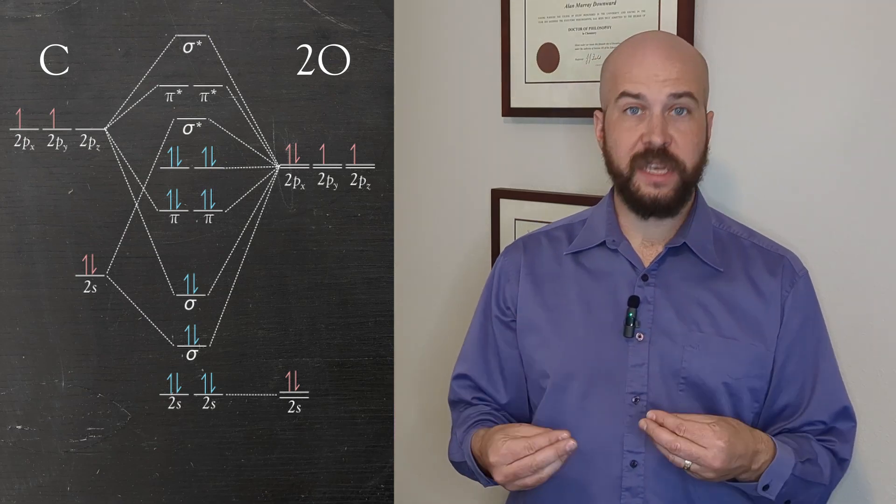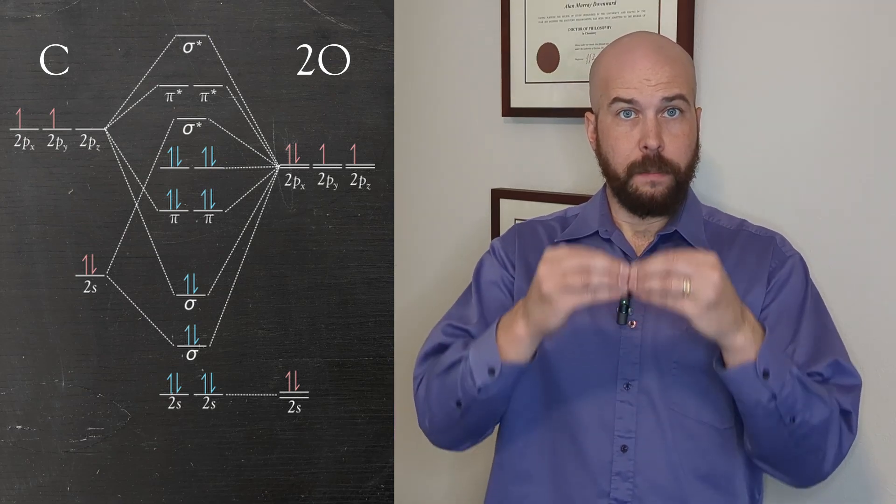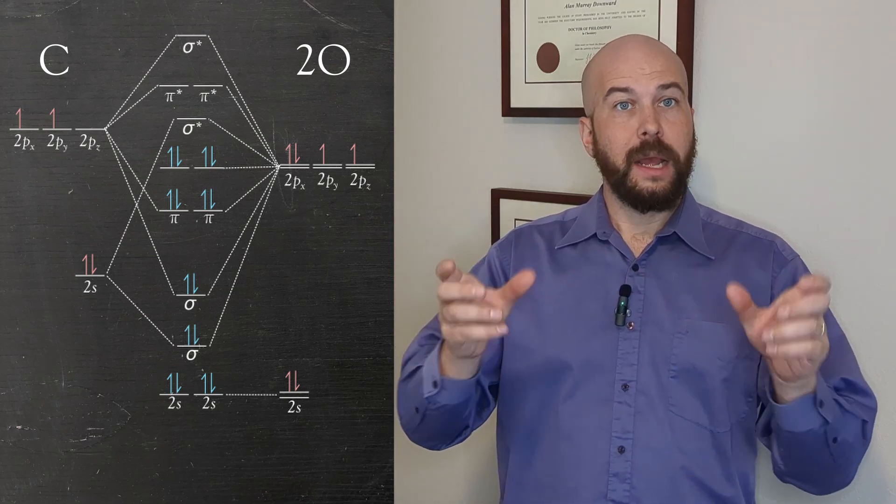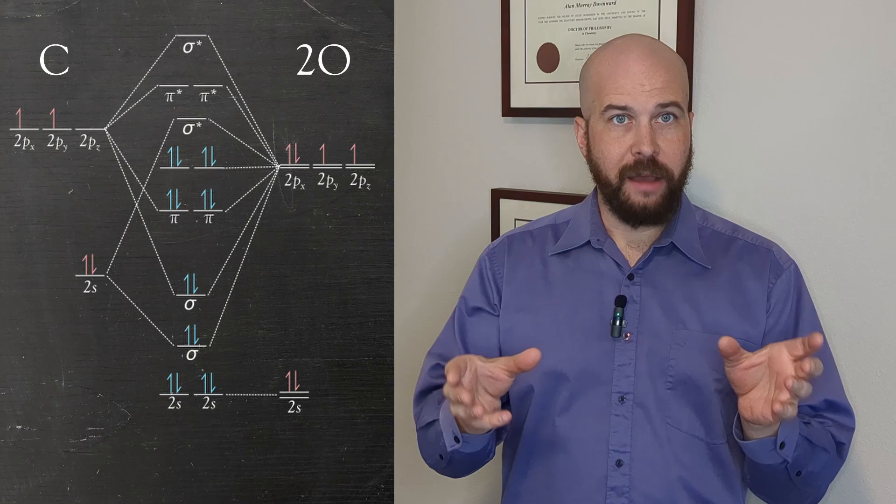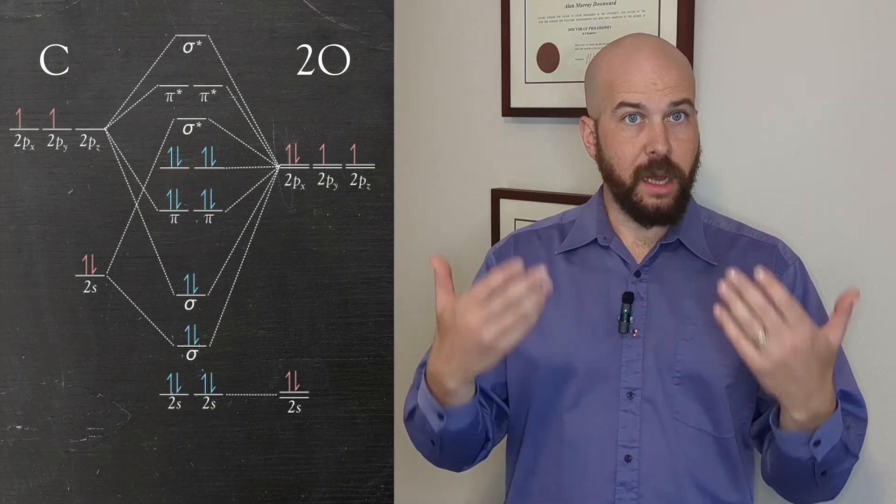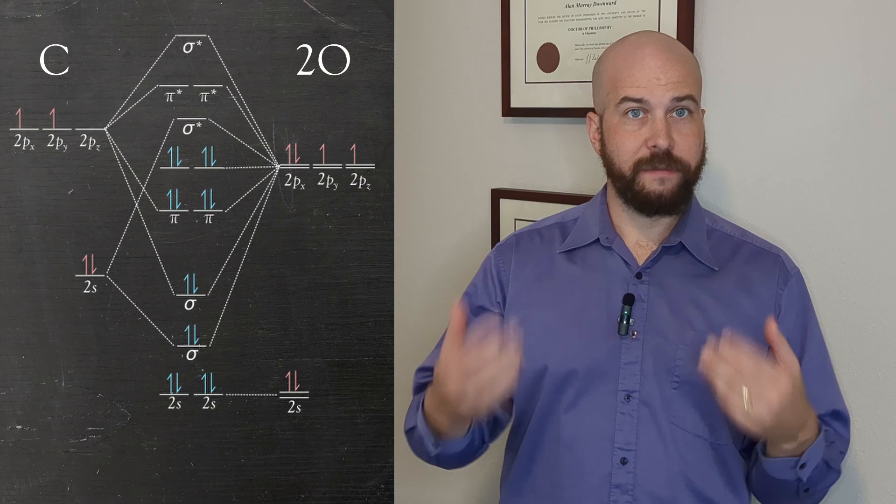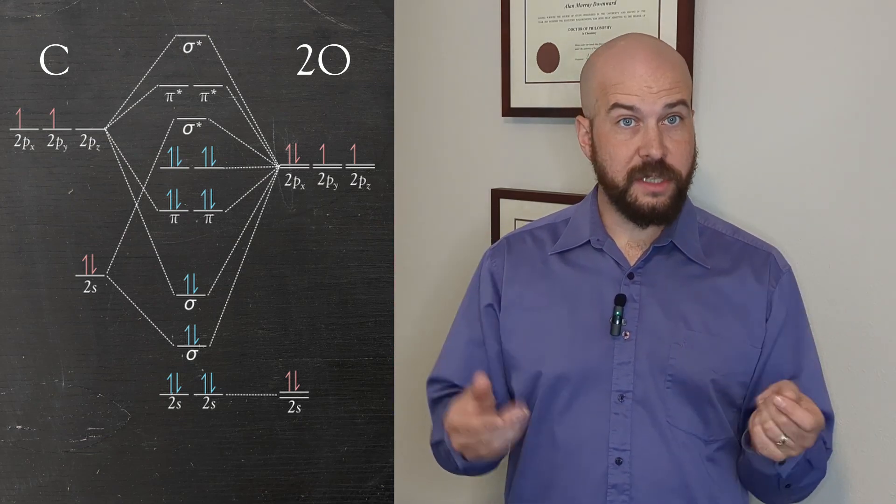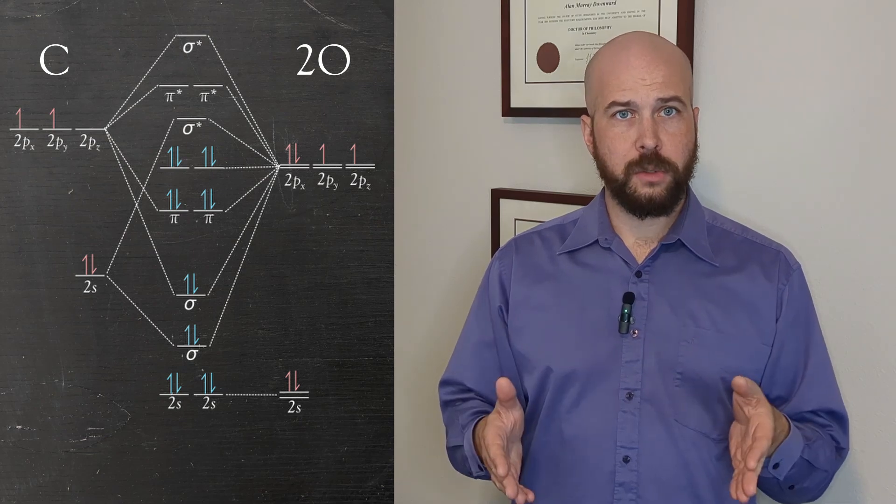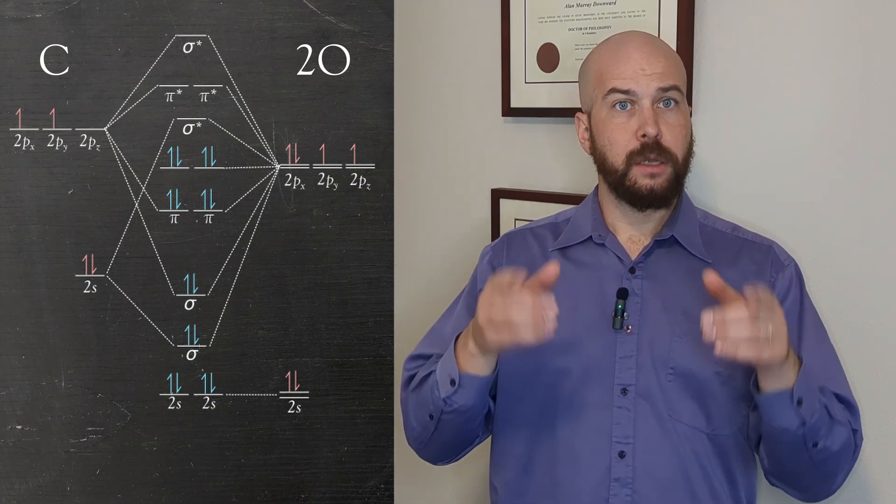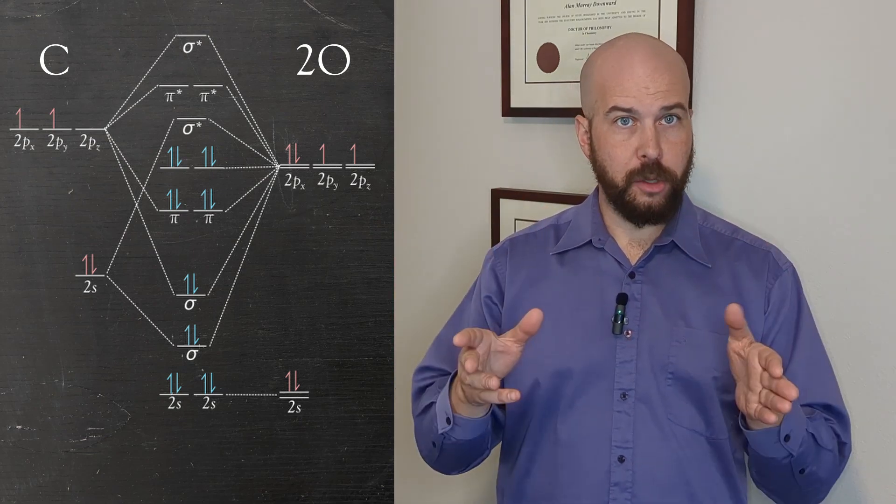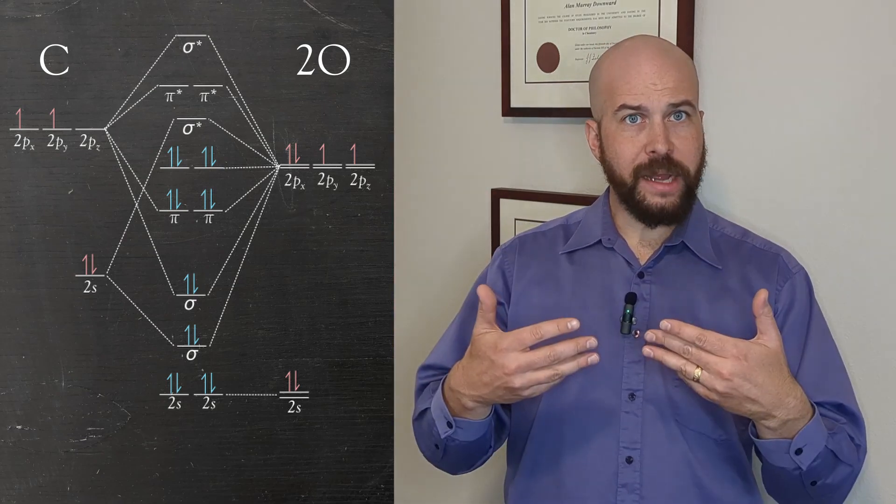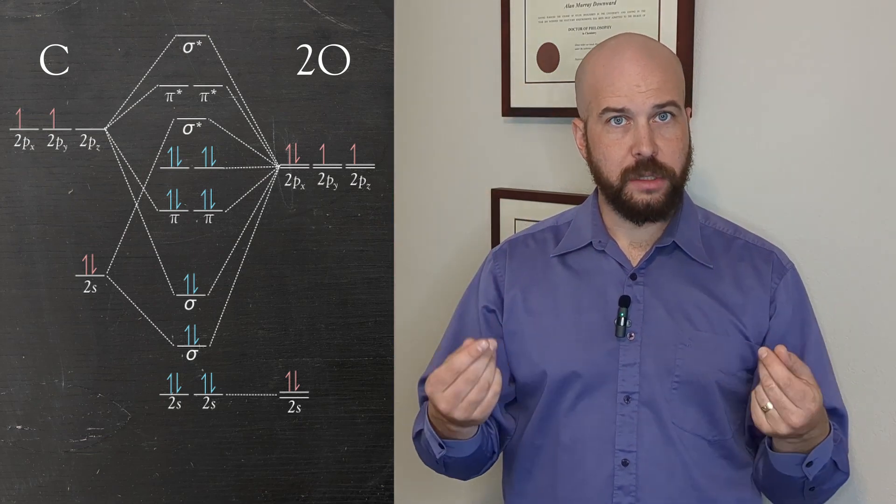Next we can consider the carbon p orbital that lies along the axis of the molecule and that will also be able to have a sigma and sigma star type bonding interaction with the oxygen atoms. The final set of interactions we need to consider are those from orbitals that are perpendicular to the axis of the molecule. These will generate pi type bonding interactions and antibonding interactions.